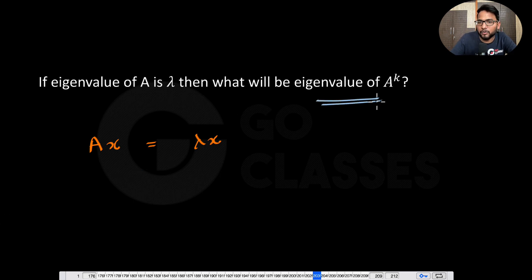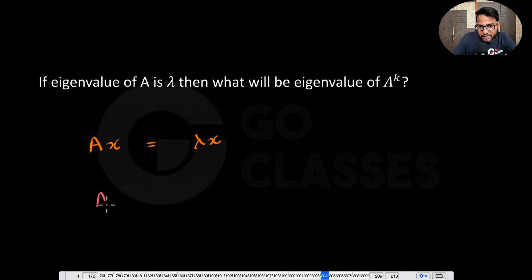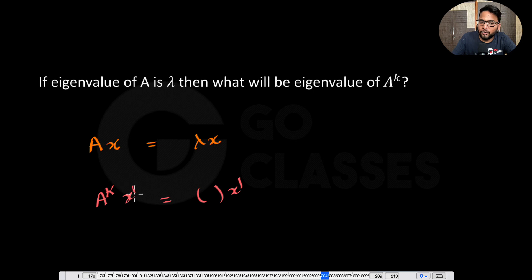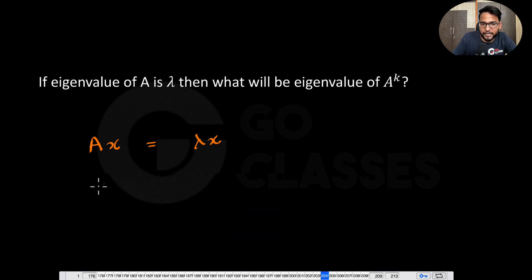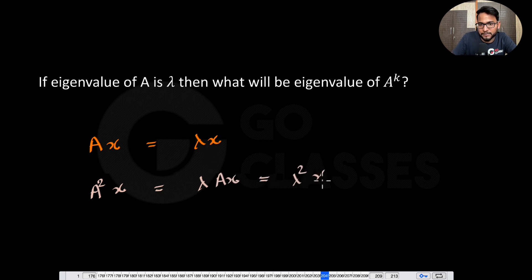They're asking: what will the eigenvalue of A^k be? For that, we need something like A^k times some vector equal to that same vector times some scalar. What we can do is multiply A on both sides of Ax = λx, giving A²x = λ(Ax) = λ²x.